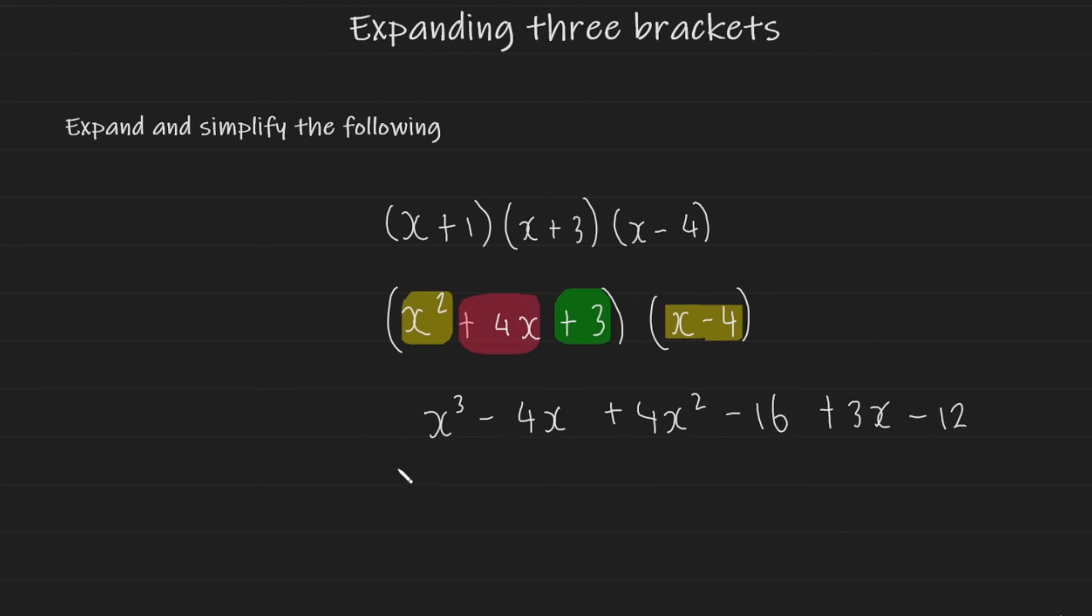I'm now going to collect like terms and simplify this. Since there's only one x cubed, I'm going to write that down first. I'm then going to collect all of my x squared. Since there's only one x squared, I'm going to write that down next. Now I'm going to collect all of my x's: minus 4x plus 3x. And this is going to give me minus x.